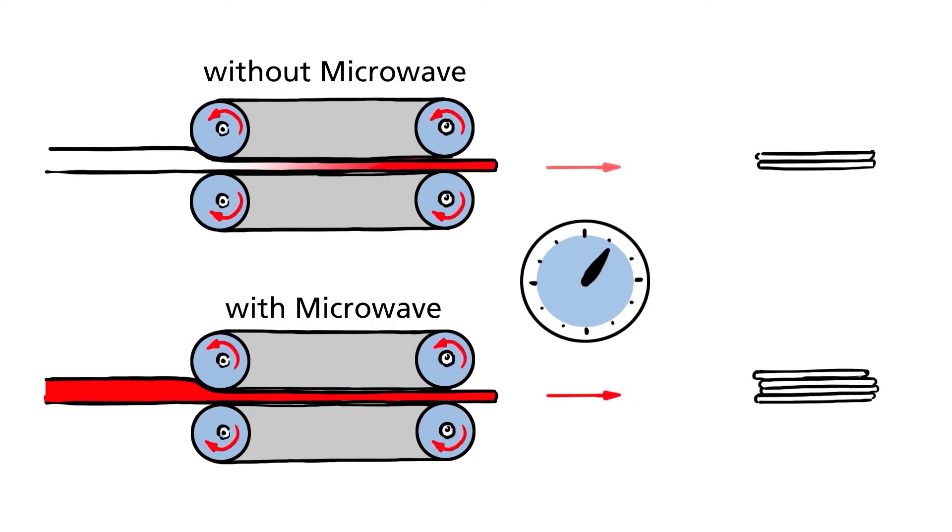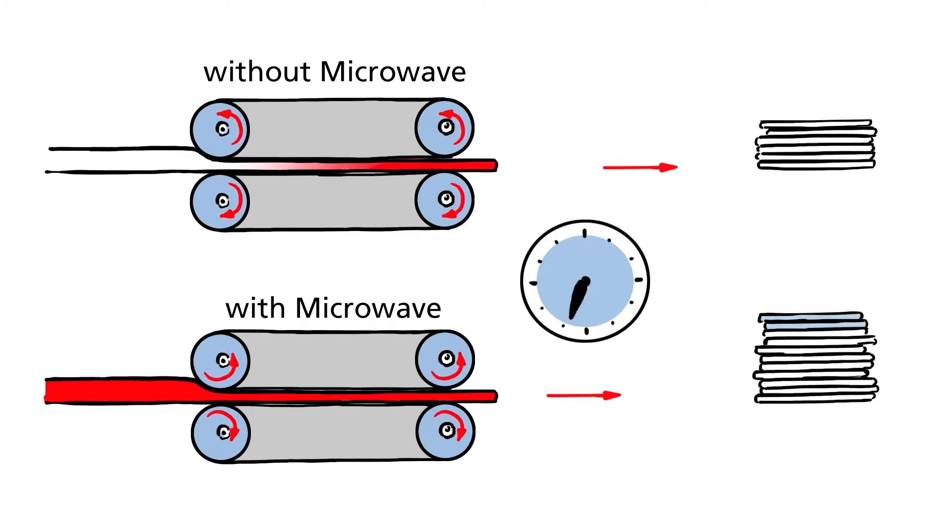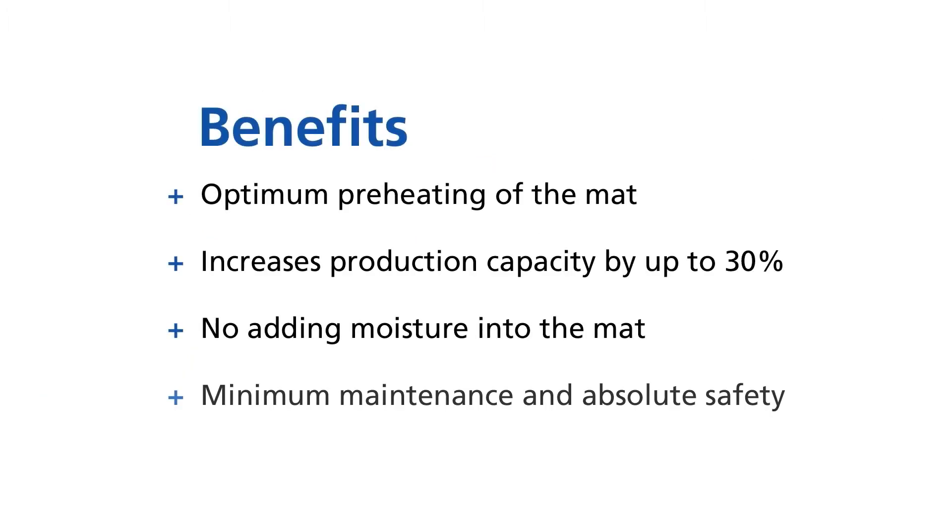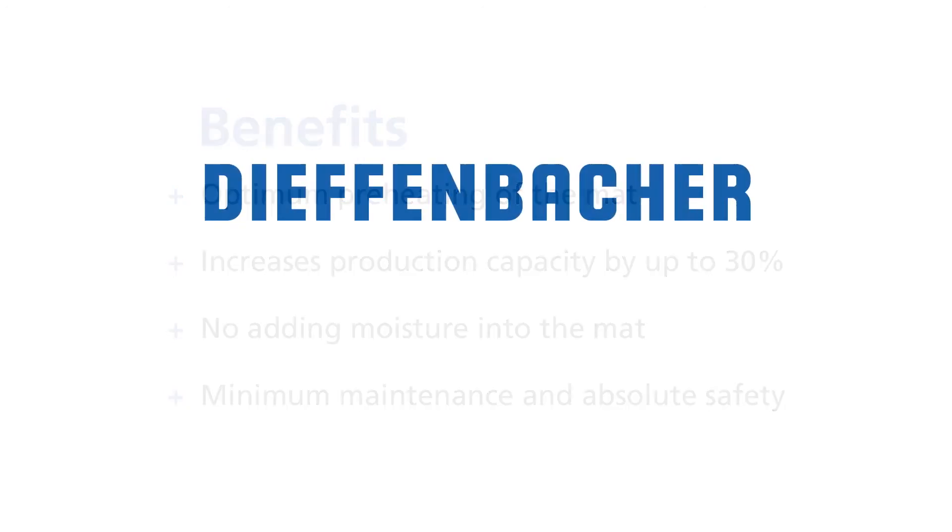The higher throughput speed accelerates the production process and increases output. Microwave technology can increase production capacity by up to 30% through optimal mat preheating without any moisture supply.